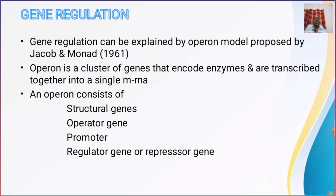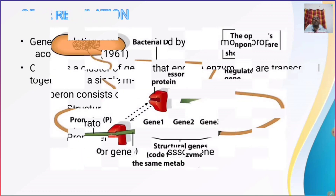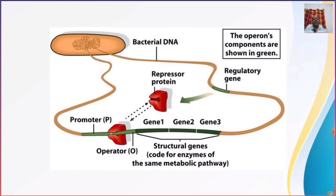The structure of an operon is made up of four parts: structural genes, operator gene, promoter region, and the regulator gene or repressor gene. We will now discuss each of these four parts in detail.